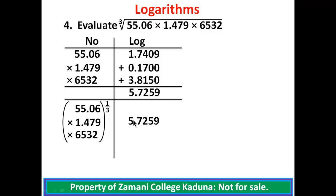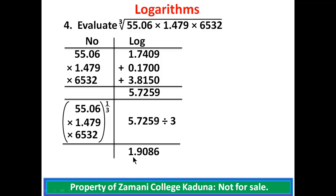Dividing 5.7259 by 3 gives 1.9086. We look for the antilog reading of 1.9086. Keeping the integer part 1, check 90 under 8, differences of 6, giving 8102. Go back to the integer part 1, add 1 making 2. Count 2 digits and place the decimal point. The solution of the problem is 81.02.